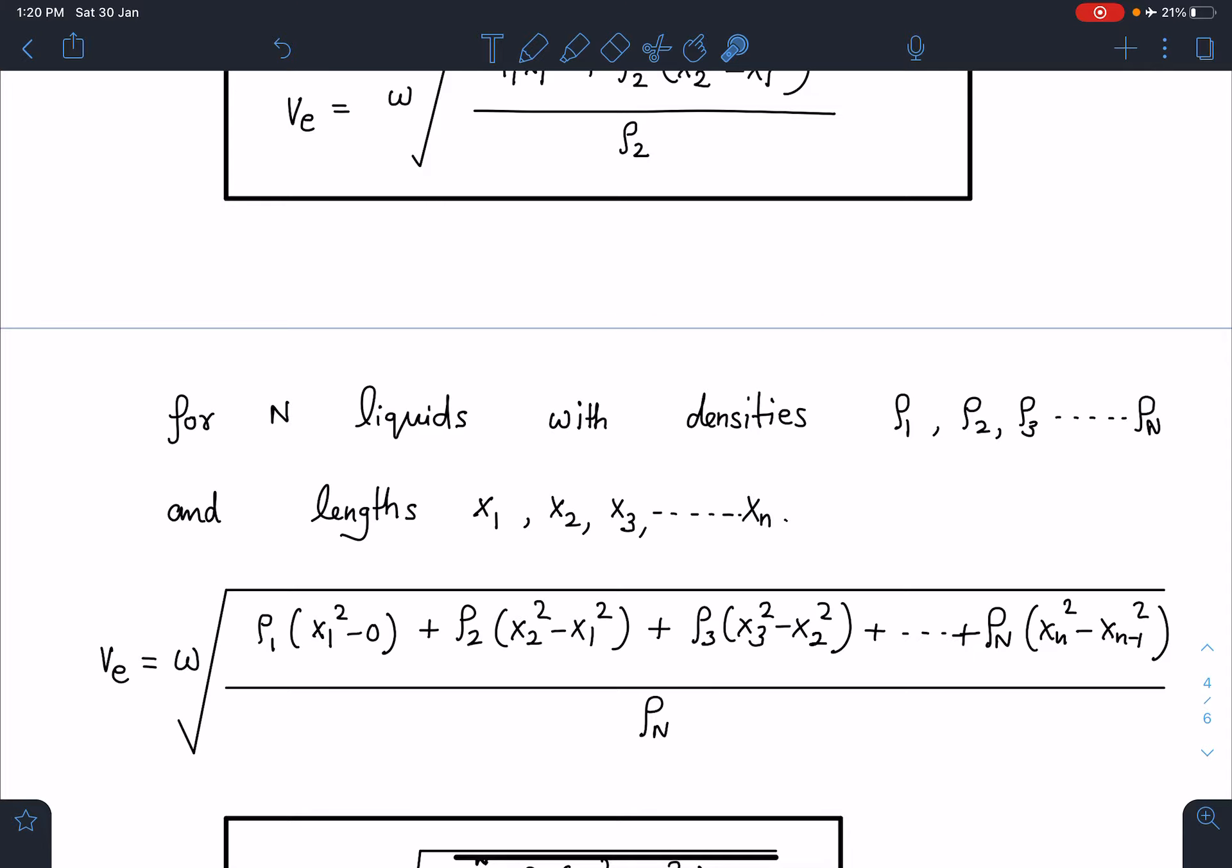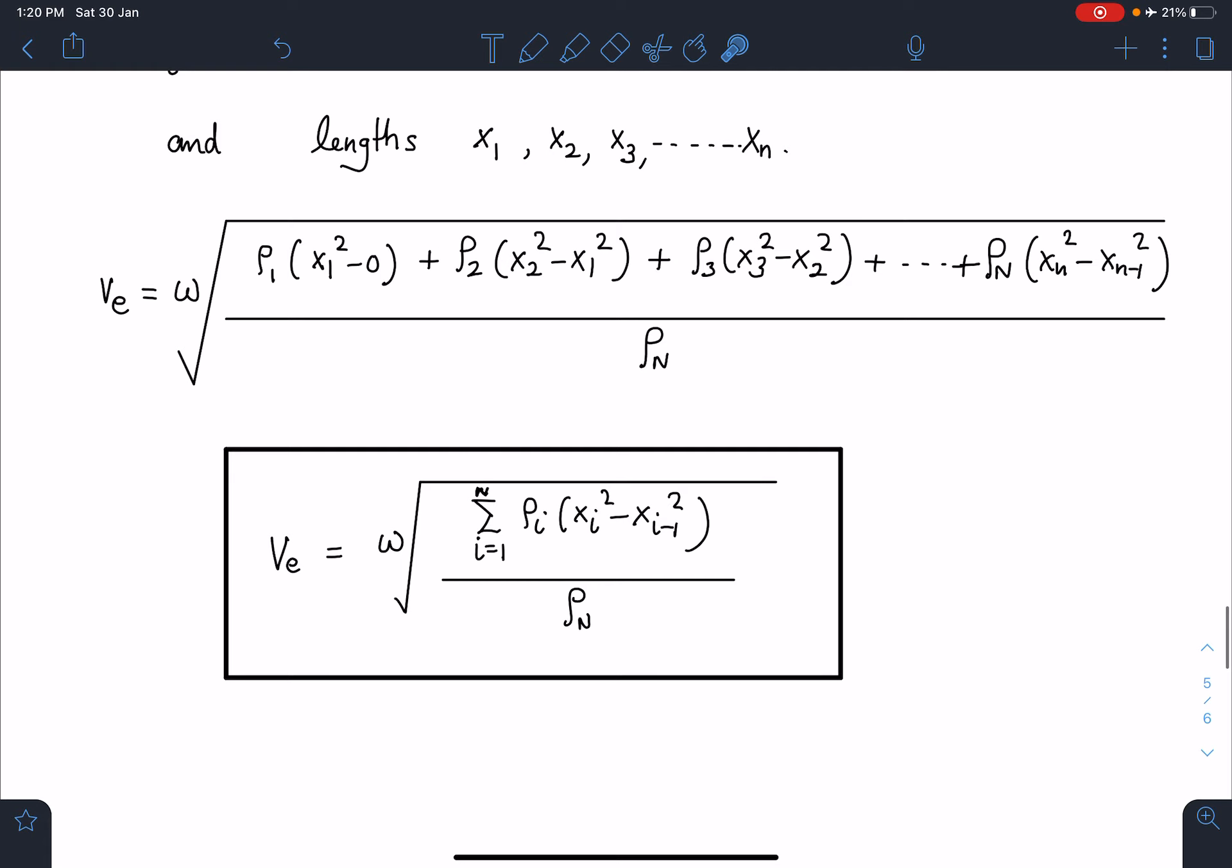This is going to be the general formula for velocity of efflux in a rotating tube: omega times sigma rho i xi square minus x i-1 square divided by rho of n, the rho of out. This is going to be the final answer.